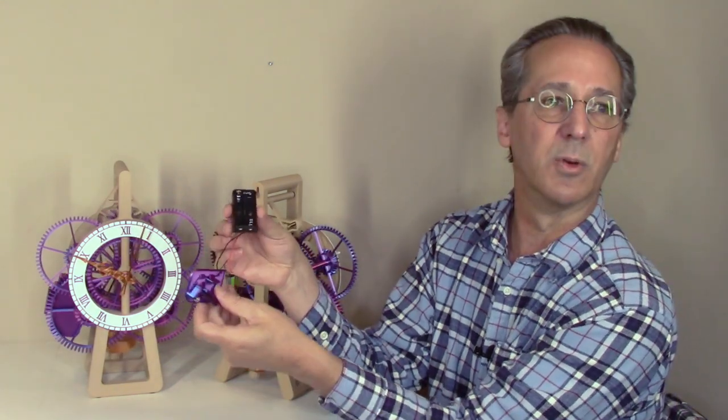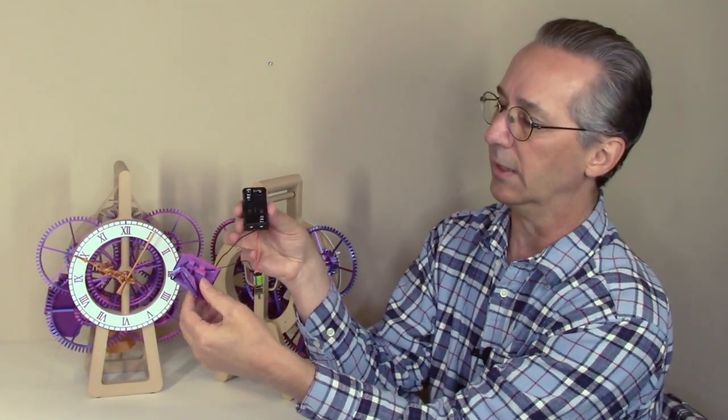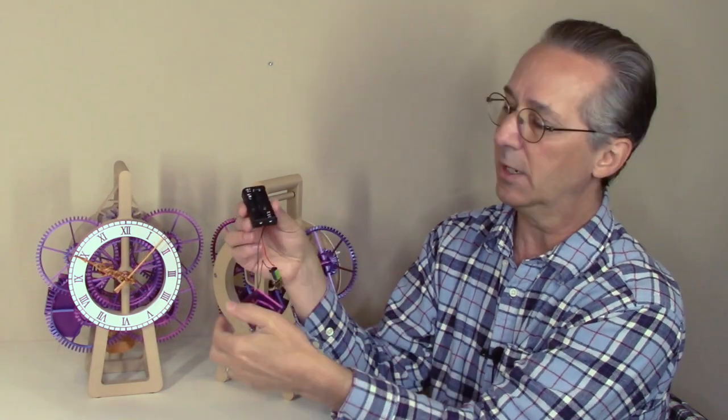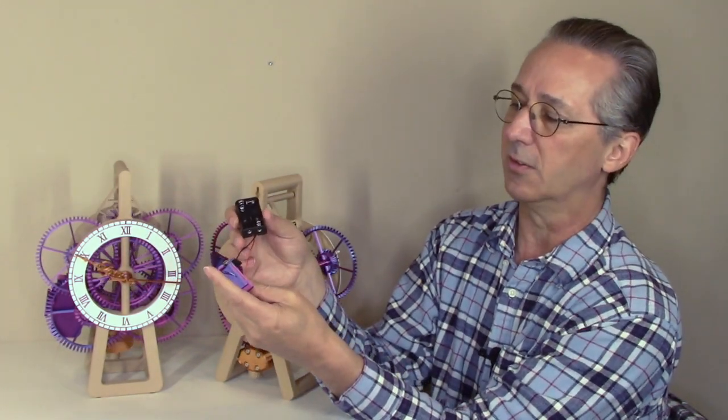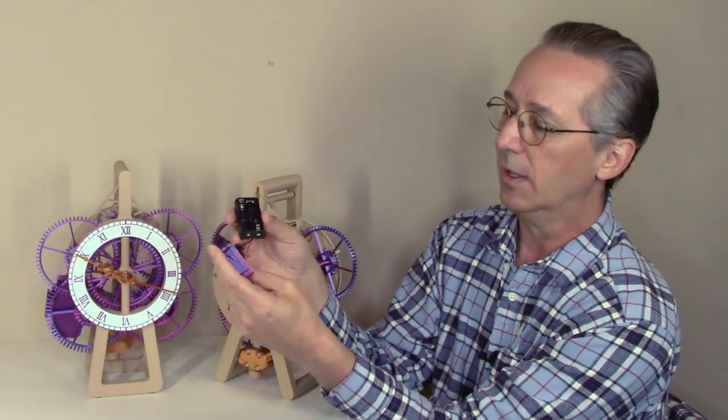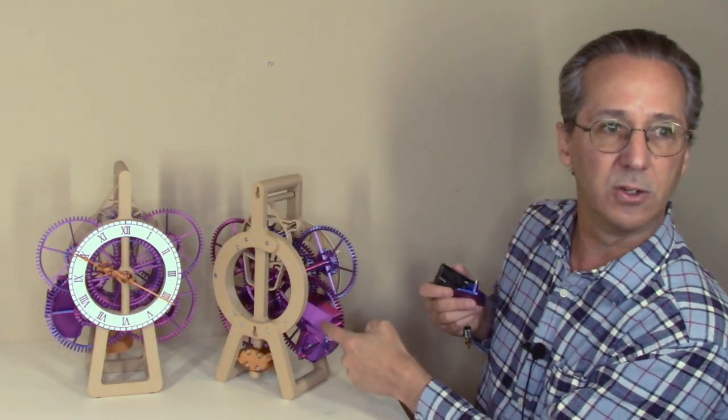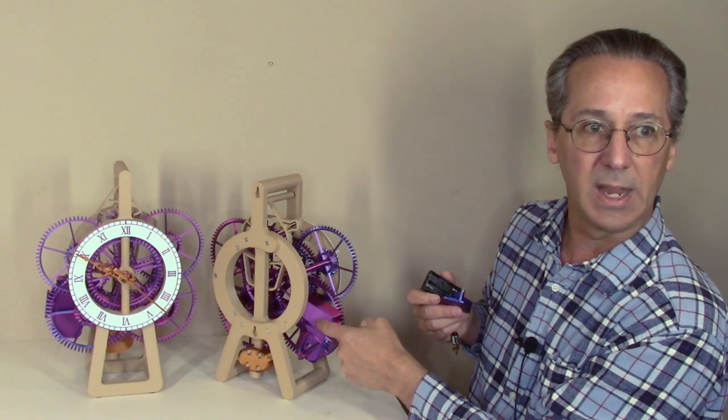This is all of the wiring that's involved in building this clock. There's a battery compartment that runs power to the motor and to the reed switch, and then a wire that goes from the motor to the reed switch. So really just a couple of solder connections, and all of that tucks into this motor cavity.